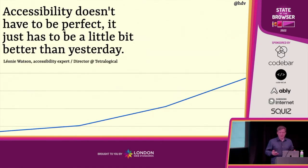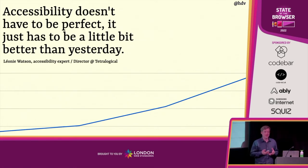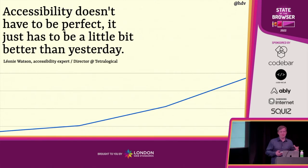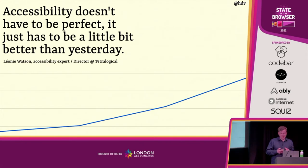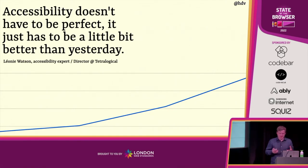For that reason, I think it makes sense to have an attitude like Leonie Watson likes to say in her presentations: accessibility doesn't have to be perfect, it has to be a little bit better than yesterday. This isn't about being lazy — she means that it's okay if we don't make it perfect, because perfect is really hard to reach and probably impossible. That's how accessibility works — it's somewhat subjective.